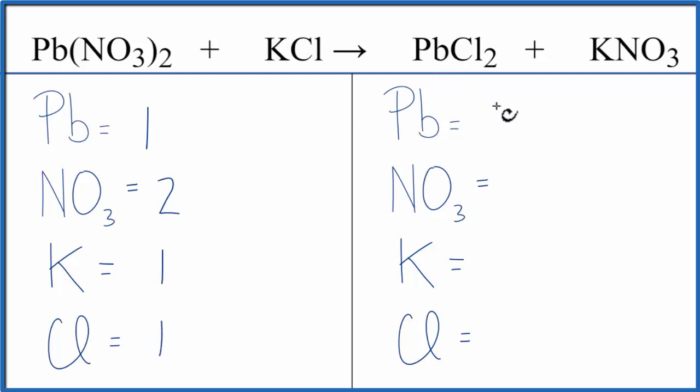On the product side, we have Pb 1, NO3 1 of those, K 1, and Cl 2.